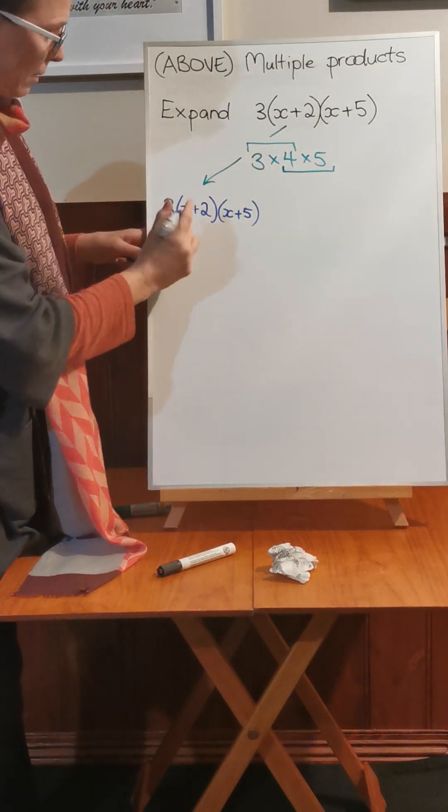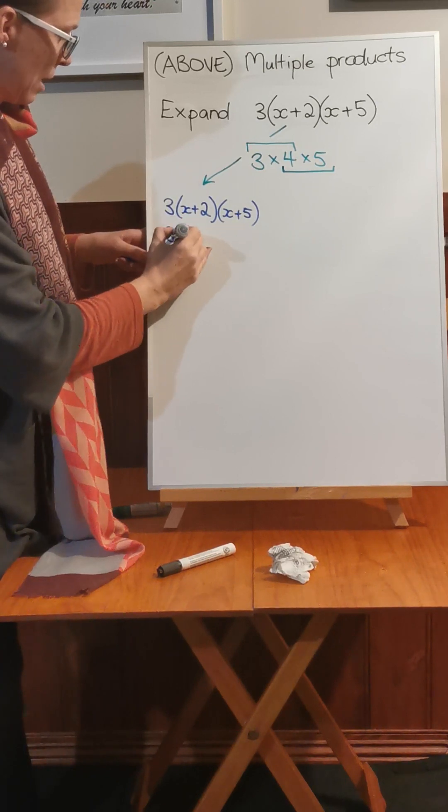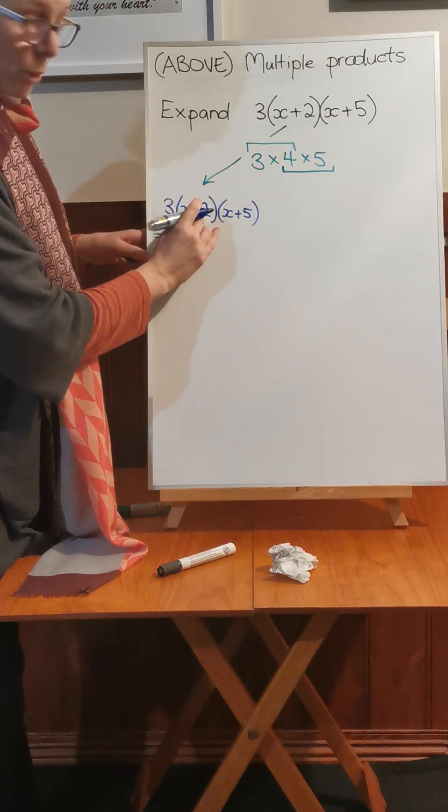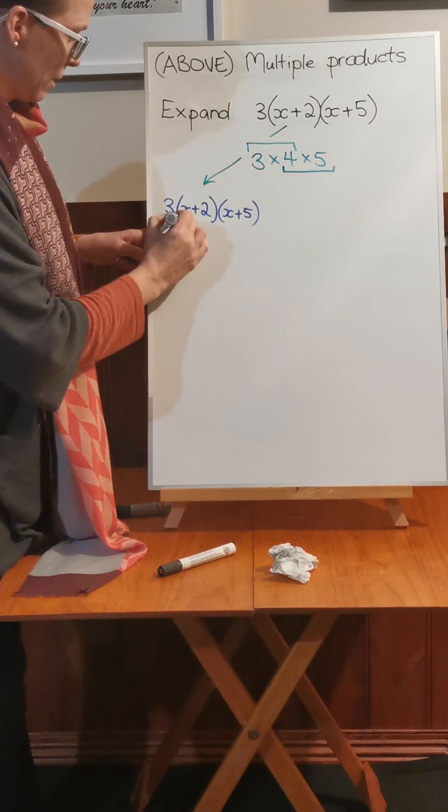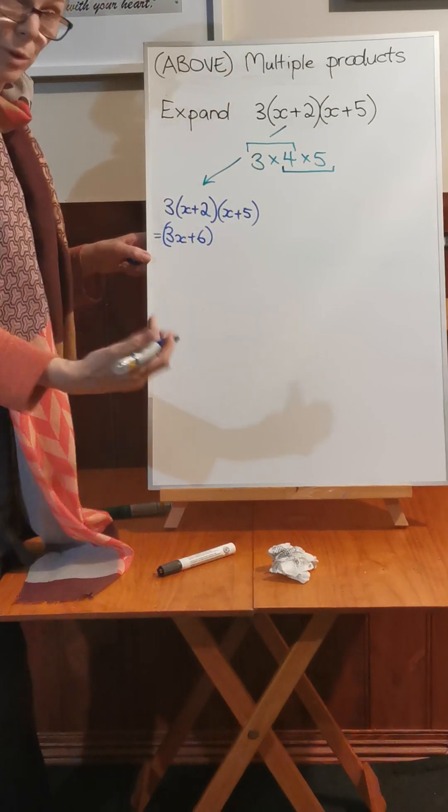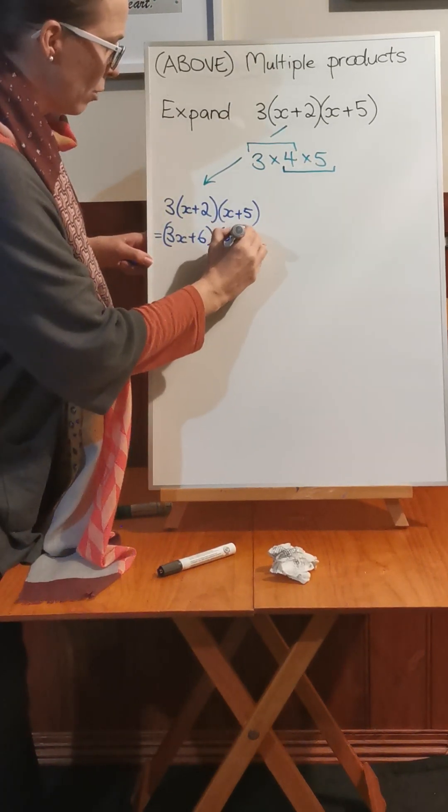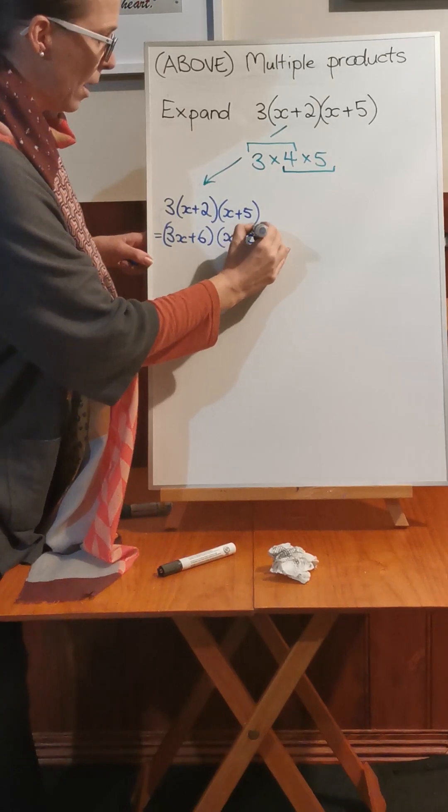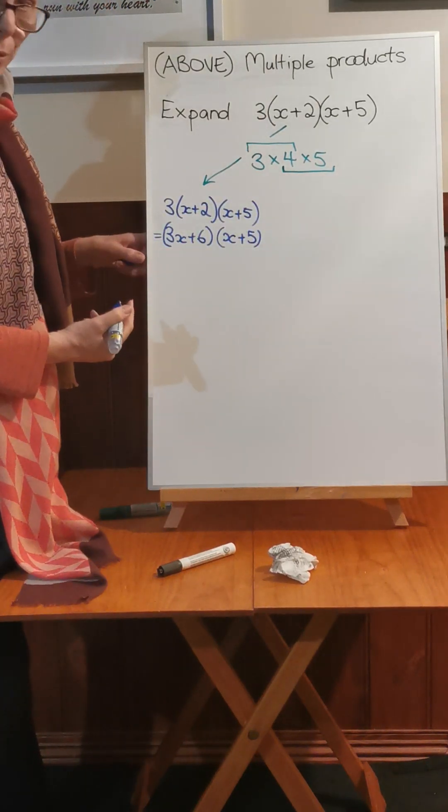So 3 times x is 3x. 3 times positive 2 is positive 6. So that becomes our first bracket and we know we're going to multiply that by whatever was at the end, the third bracket.